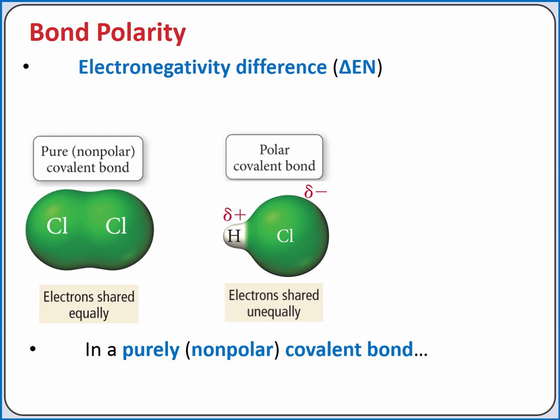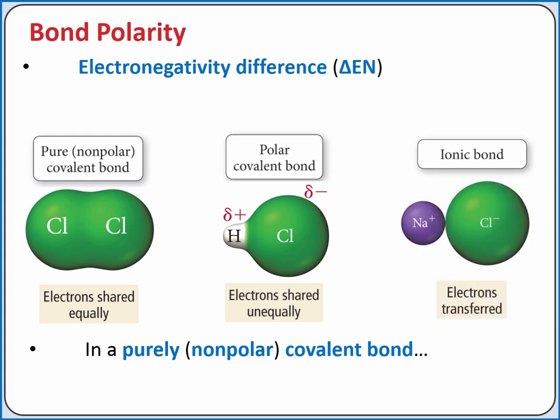This is the case for HCl, where there is an electronegativity difference of 0.9 between hydrogen and chlorine. If there is a large electronegativity difference, as is the case when we have a metal and a nonmetal, electrons are transferred and we have an ionic bond.